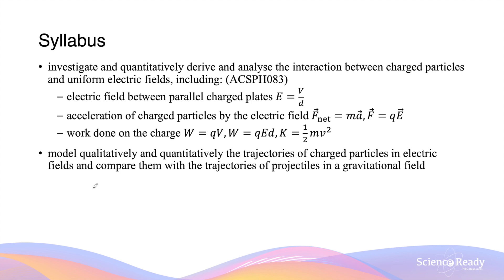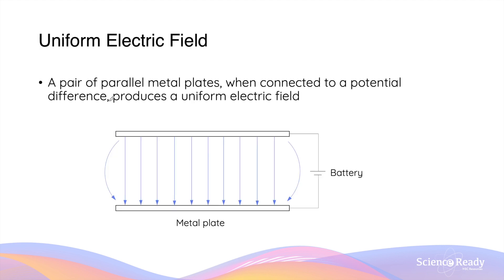Hey everyone, this video is on a charged particle in electric fields. By way of review, a uniform electric field can be produced by a pair of parallel metal plates connected to a potential difference, also known as a voltage. This can be easily set up when you have a pair of parallel metal plates connected to a battery which produces a DC voltage or power supply.